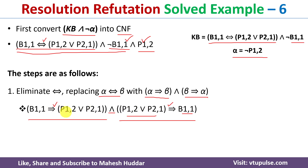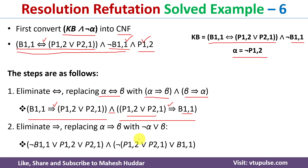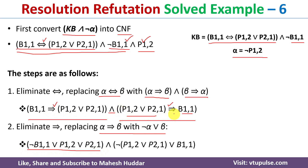We need to eliminate implications. Alpha implies beta is equivalent to negation of alpha OR beta. Applying this: the first term becomes (negation of B11) OR (P1,2 or P2,1), and the second term becomes negation of (P1,2 or P2,1) OR B11.